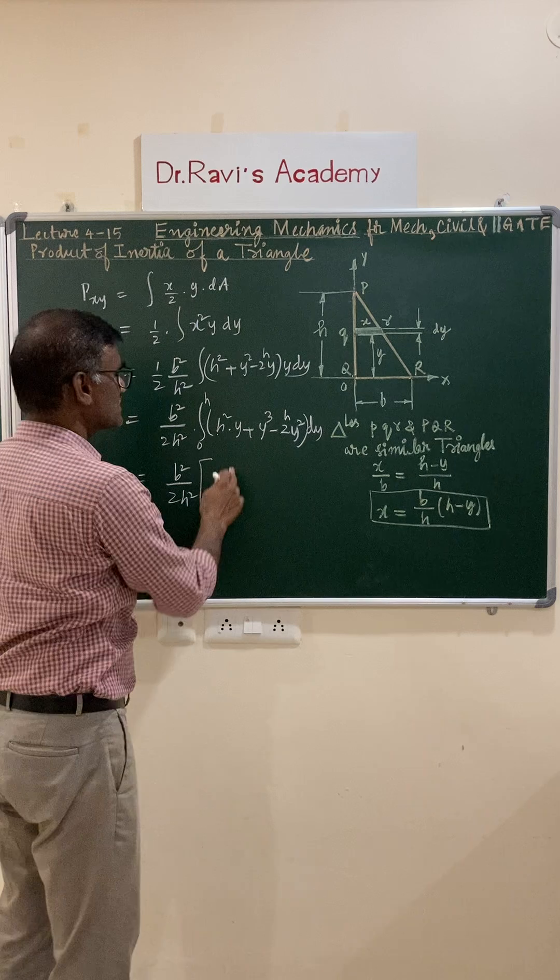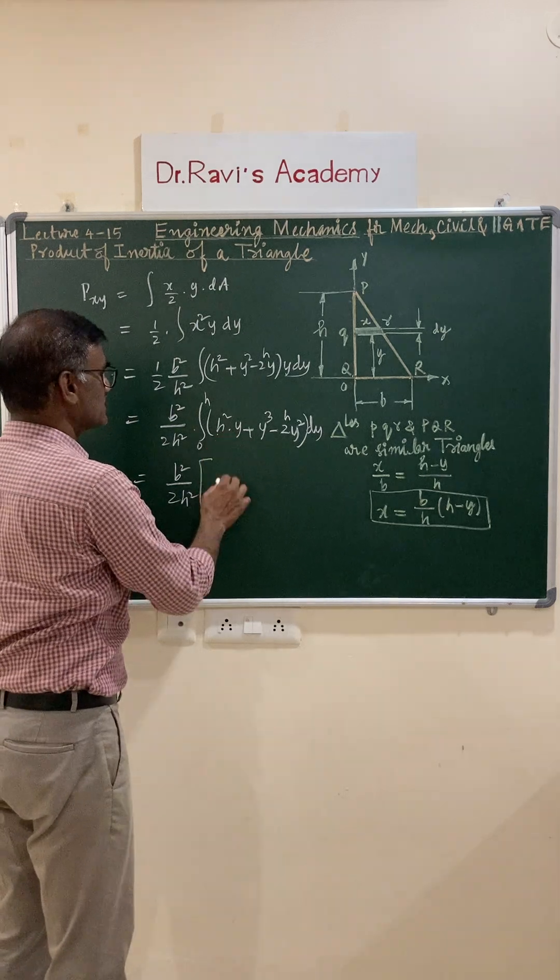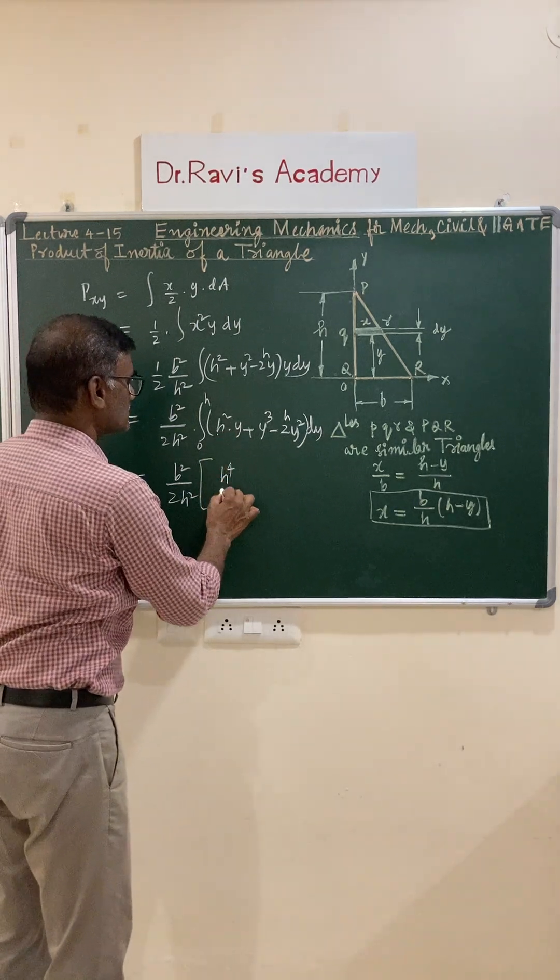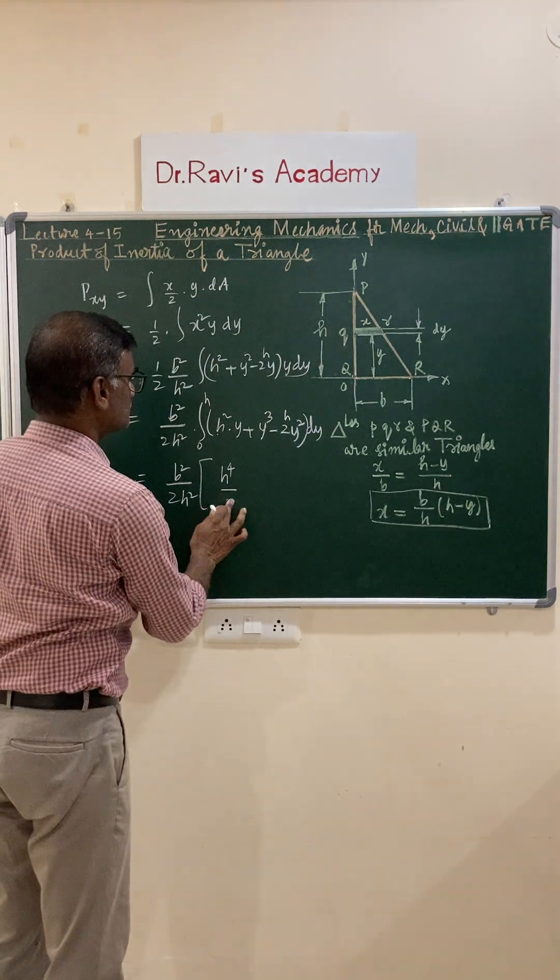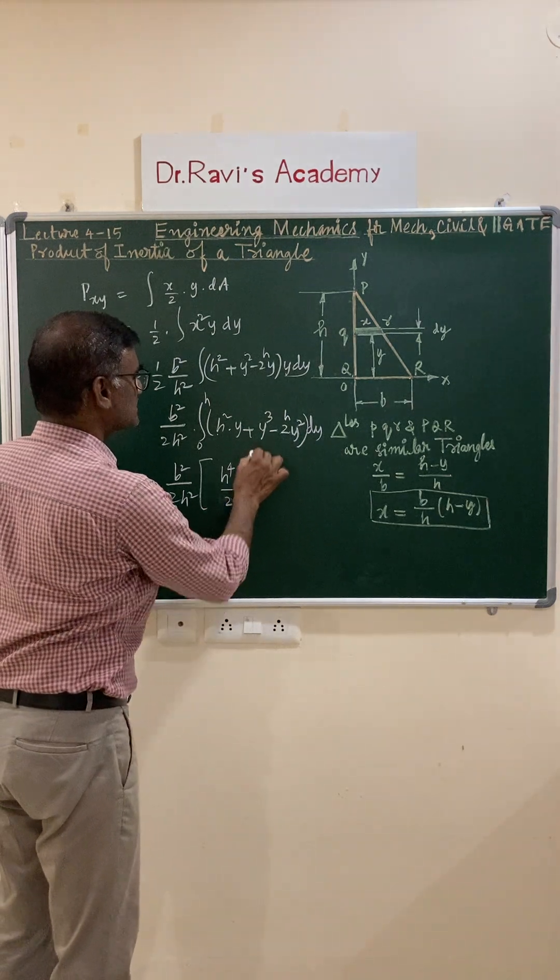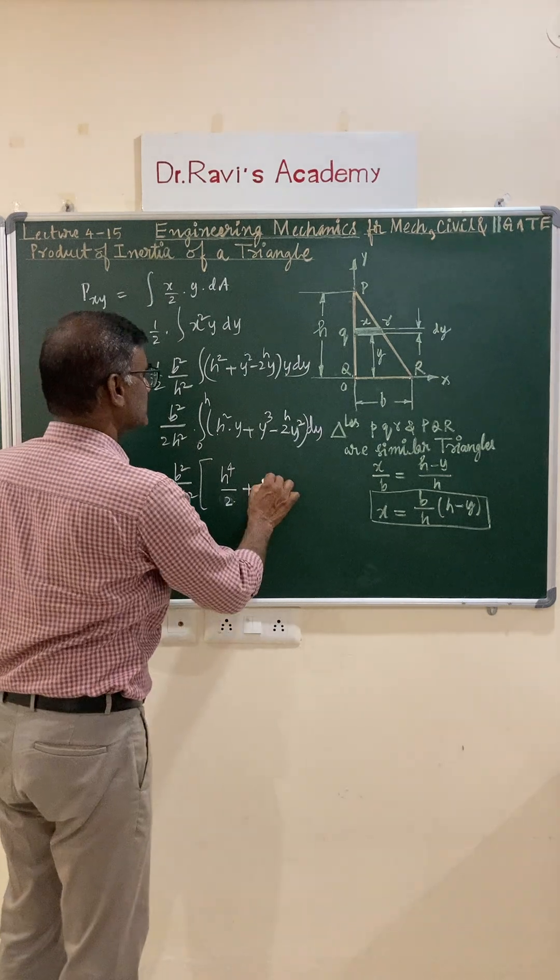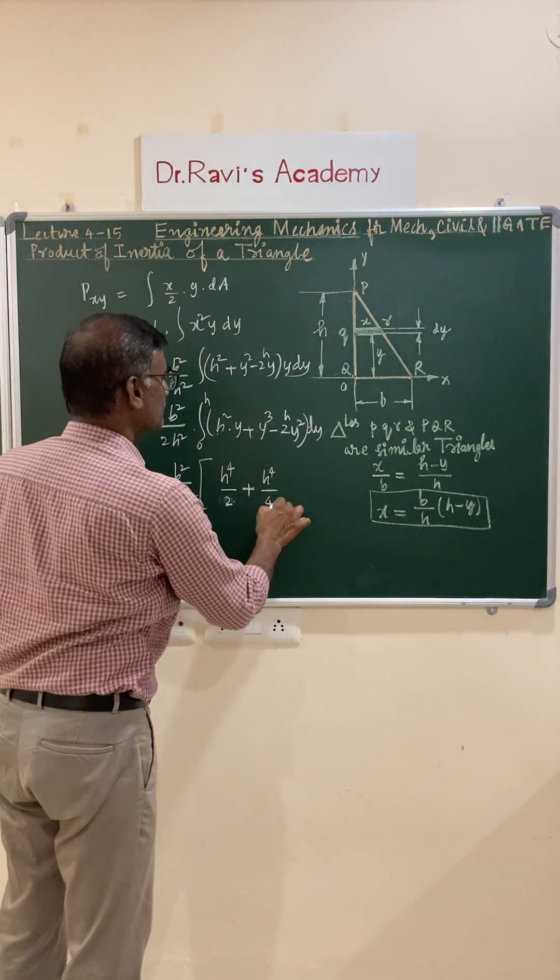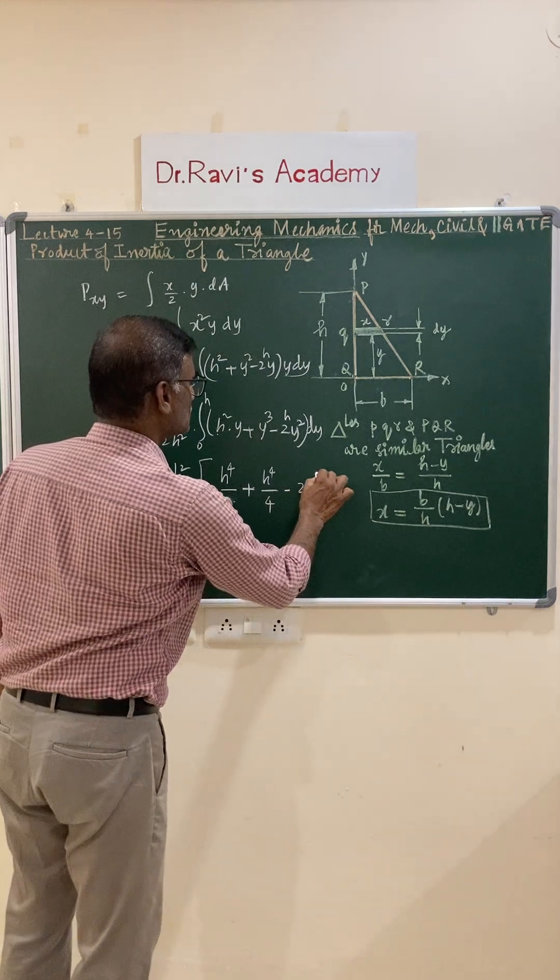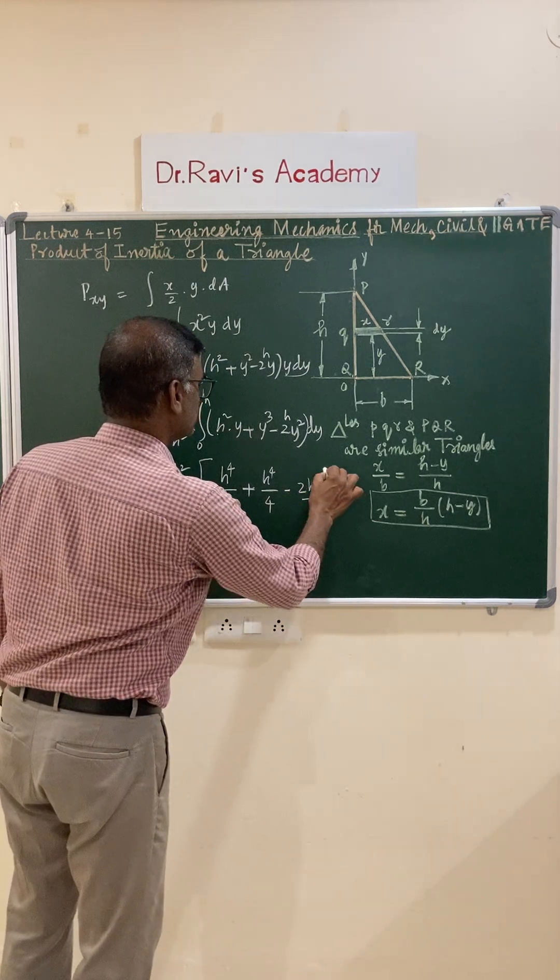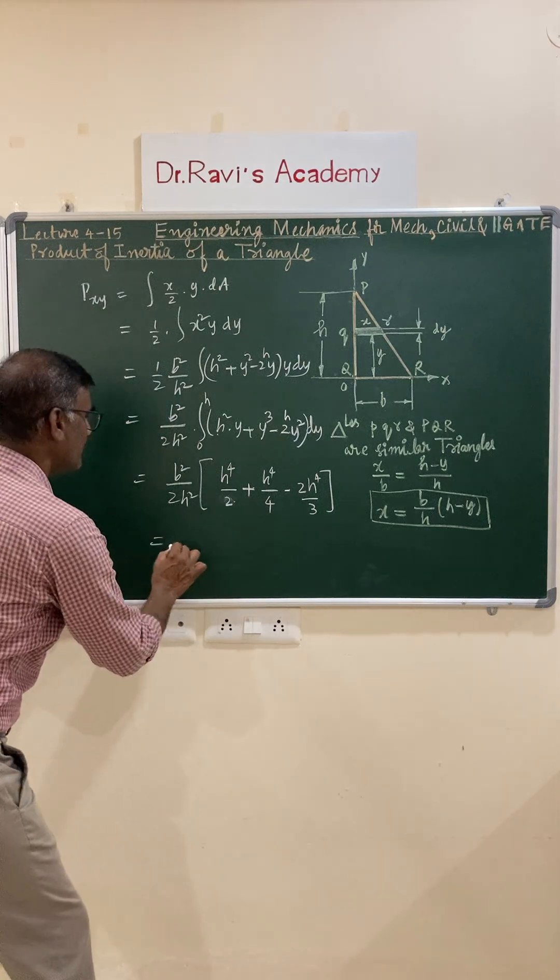The integral value is: h squared is constant, this becomes y squared by 2, that is h squared by 2, means h to the power 4 by 2, plus y to the power 4 by 4, that is h to the power 4 by 4, minus 2h into y cubed by 3, that becomes 2h to the power 4 by 3.